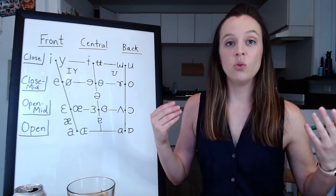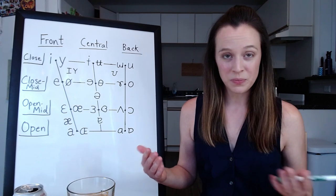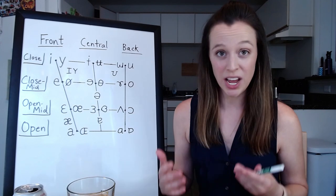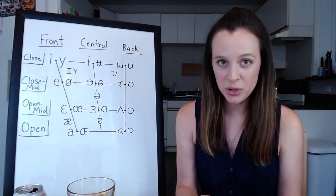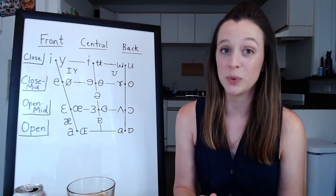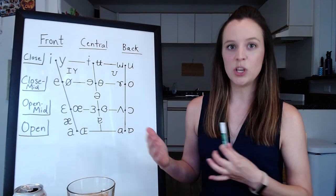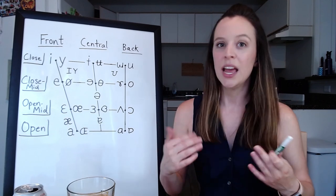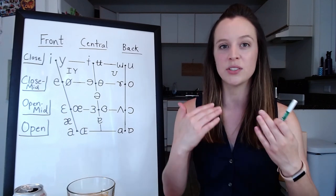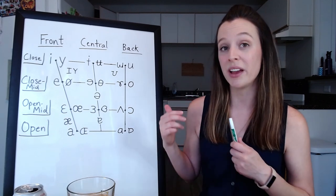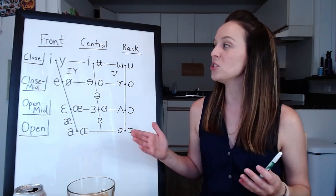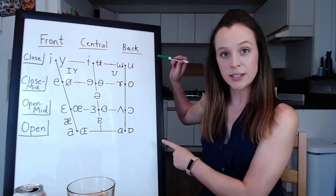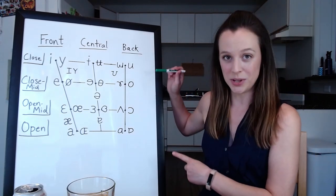Because when you make a vowel sound, the only thing that differentiates one vowel sound from another is the position of your tongue. Does that blow your mind? Because it definitely blew my mind when I learned that. When we make consonants, we use our lips and our teeth, the tip of the tongue, and friction, and all of that other stuff to make different sounds. But when we make a vowel sound, the only reason it sounds different to us is about tongue position.